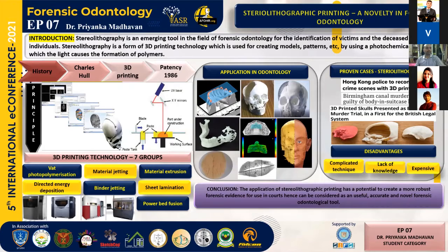This process is called photopolymerization. This 3D printing technology is of seven groups: VAT photopolymerization, material jetting, material extrusion, directed energy deposition, binder jetting, sheet lamination, and powder bed fusion.